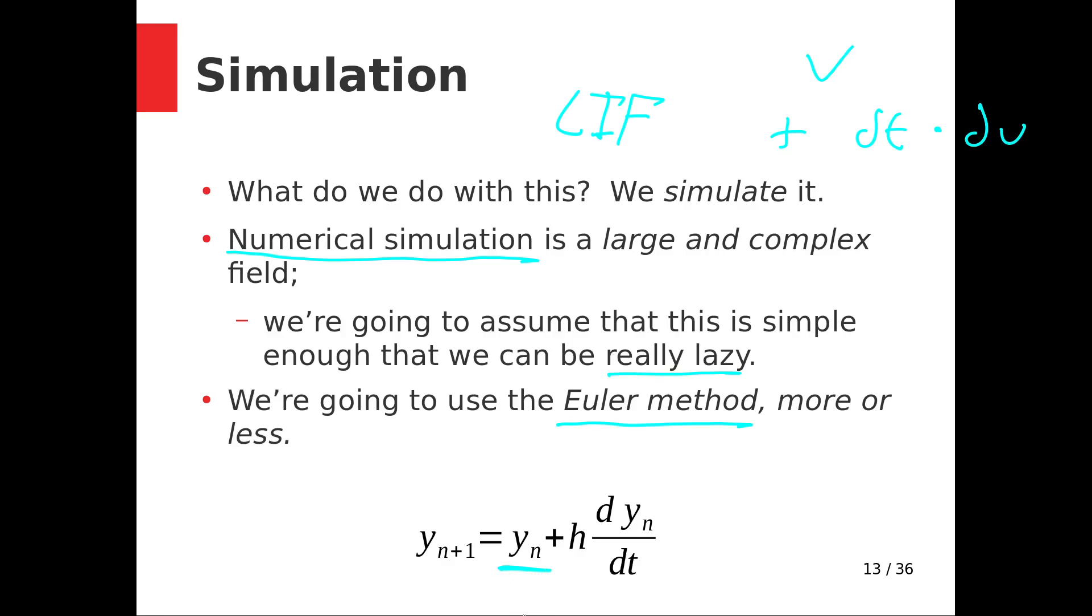Every time step we start with a voltage—I say voltage, it could be any variable in our model, but since the LIF only has one variable, voltage, that's the only time dynamic variable. We start with a value for voltage and then multiply that with some little bitty time step times that update rule.